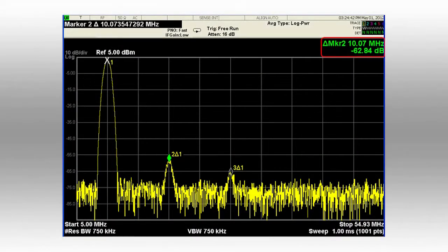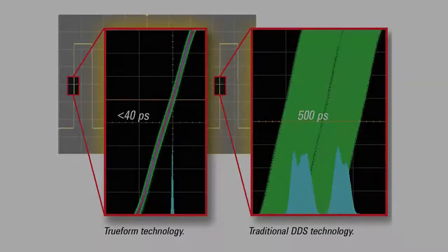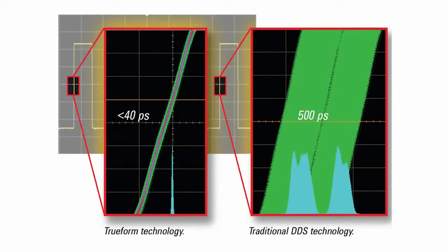Agilent's TrueForm technology provides the highest signal fidelity of any waveform generator in its class, resulting in less than 0.04% total harmonic distortion and less than 40 picoseconds of jitter.